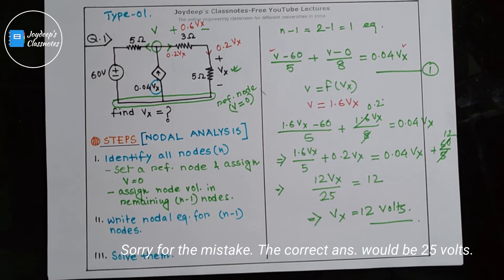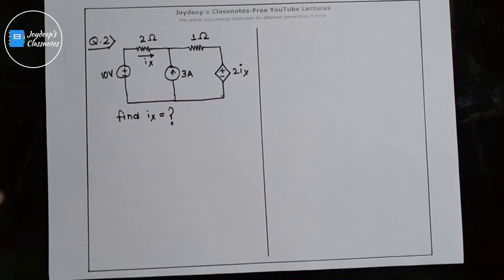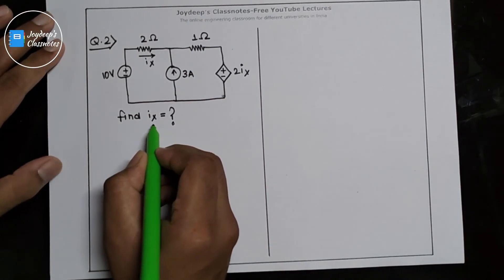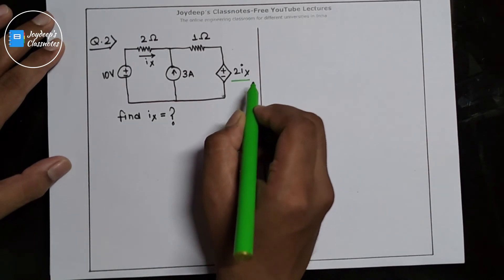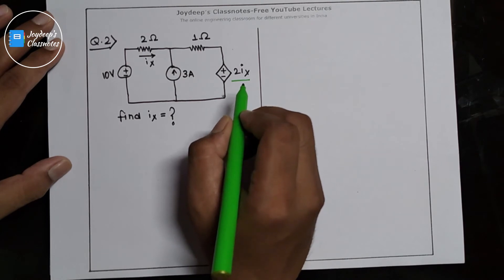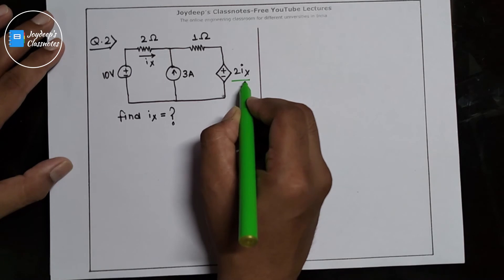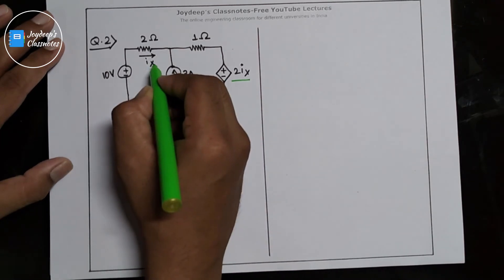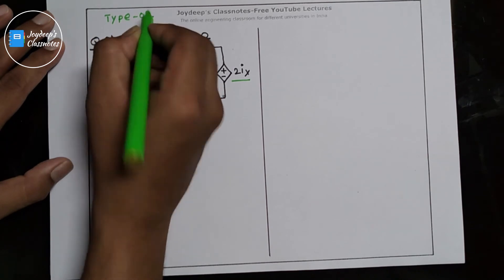Always remember: when the question is of nodal with dependent source, you have to express the node voltage in terms of the dependent variable. Now let's move to the next question. We have to find out Ix. A dependent source is given, so it's a problem of nodal with dependent source. The dependent source depends on a current value — a branch current, that is Ix. So the question is of type two.